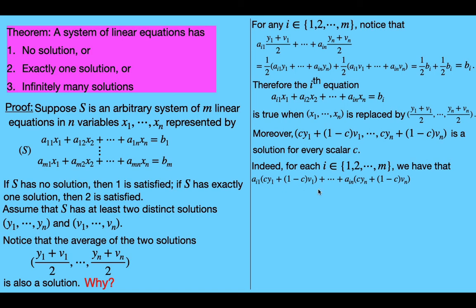That equals c times the first sum plus (1 minus c) times the second sum — we get that by grouping all the y terms together and all the v terms together. Since y sub 1 to y sub n is a solution of this system, it's a solution of the i-th equation, so the first sum equals b sub i.